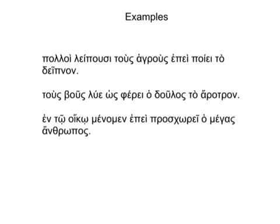Here are some examples of temporal clauses in Greek. Our first sentence means: many leave the fields when he or she makes dinner. Notice a couple things. First, we have two clauses — how do I know? We have two verbs, leipusi and poie. Second, we have a clause marker, epe, meaning 'when.'